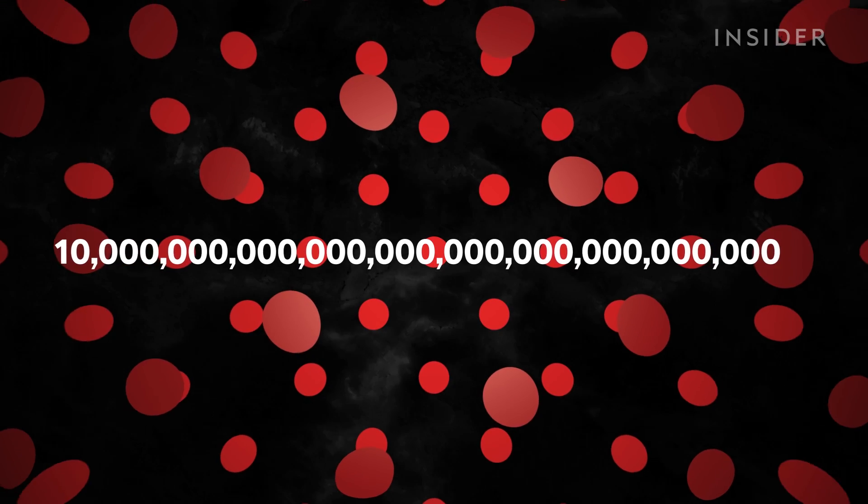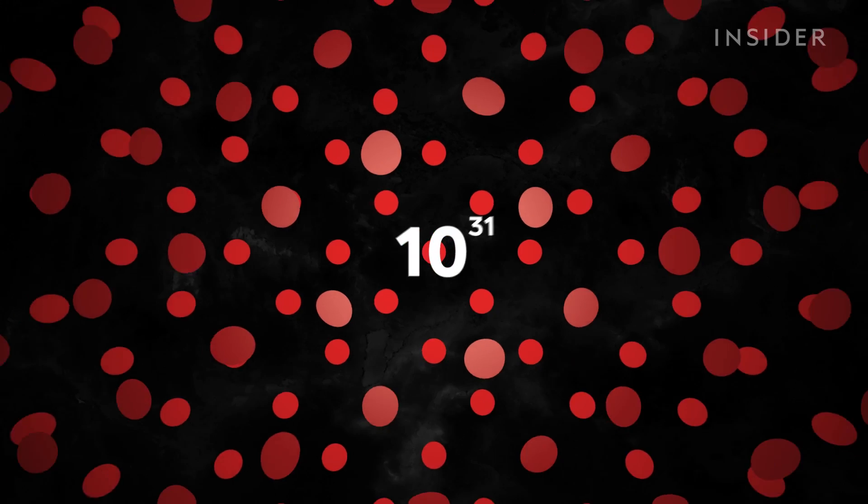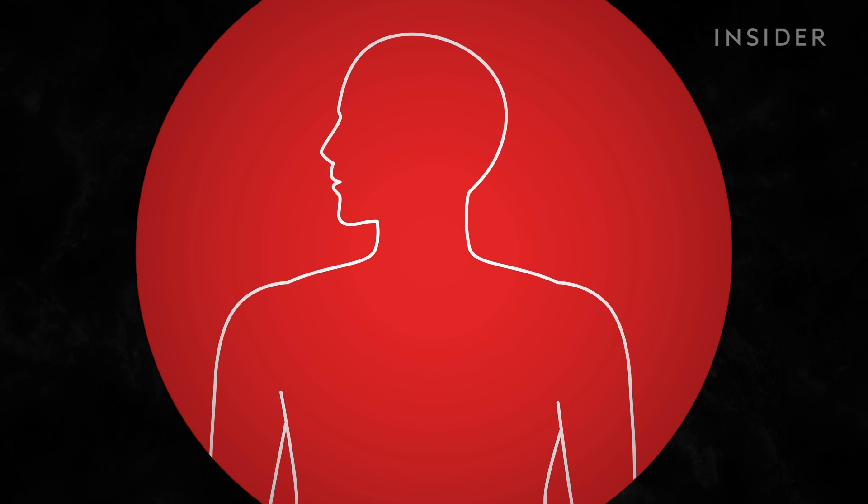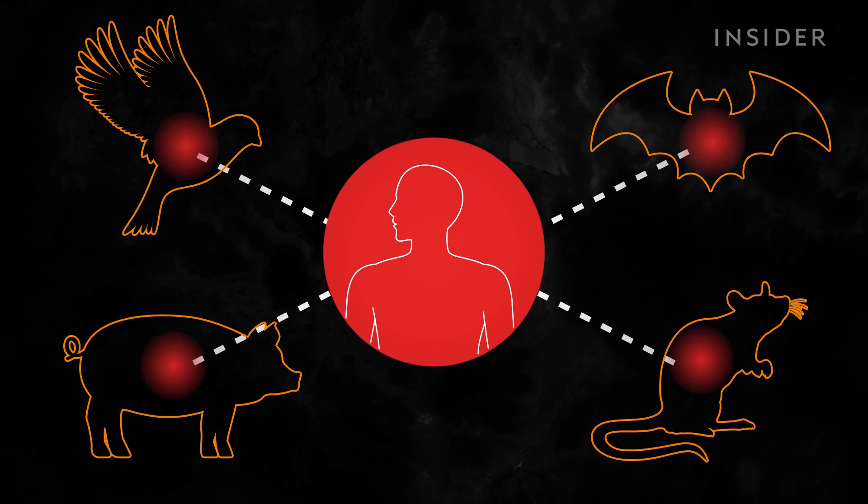There are an estimated this many individual viruses on Earth. Luckily, there are only a little over a thousand virus strains known to infect humans, the majority of which come from other animals.